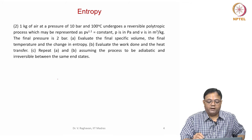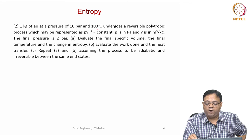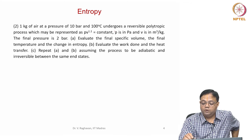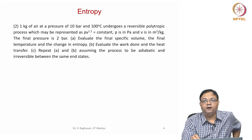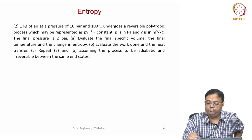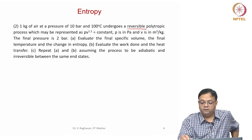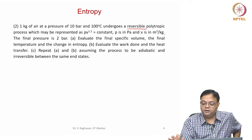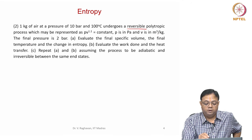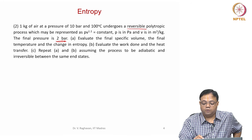This problem illustrates that an engine can work with multiple reservoirs, taking and rejecting multiple amounts of heat to different reservoirs. That is the first problem. Second problem: 1 kg of air at a pressure of 10 bar and 100 degrees centigrade undergoes a reversible polytropic process represented as PV^1.1 = constant.